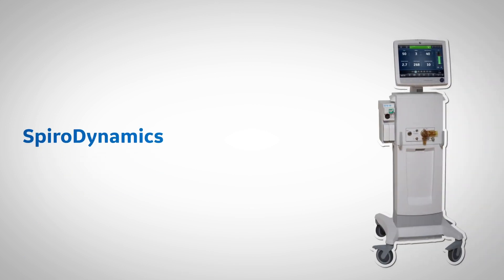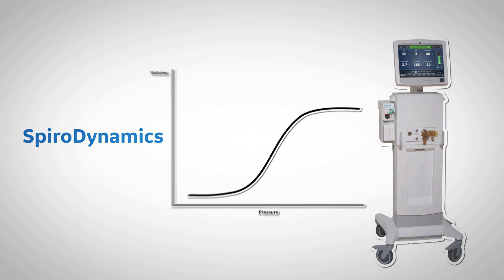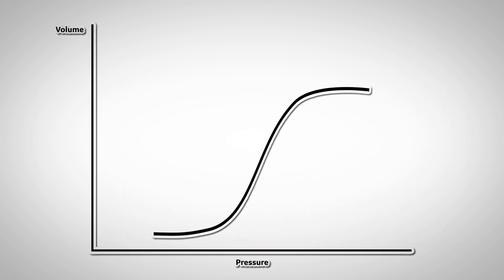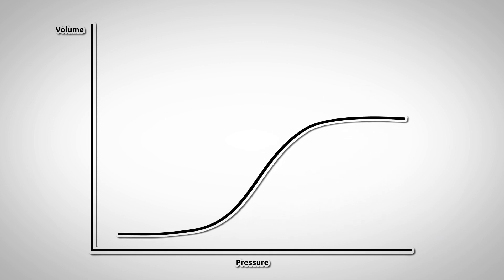SpiroDynamics is a CareScape R860 clinical decision support tool which draws a dynamic pressure-volume curve breath-by-breath regardless of the volume or pressure control modes of ventilation. The use of the pressure-volume curve can help to identify changes in compliance by showing changes in volume over changes in pressure.